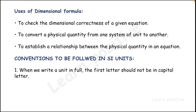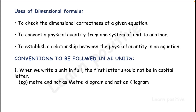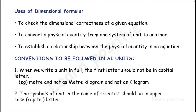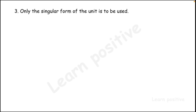The first convention: when writing a unit name in full, the first letter should not be capital. For example, write 'metre' in small letters, not 'Metre', and 'kilogram' starts with a small letter when written in full. However, when using symbolic representation, capital letters are used — for example, newton: capital N; joule: capital J.